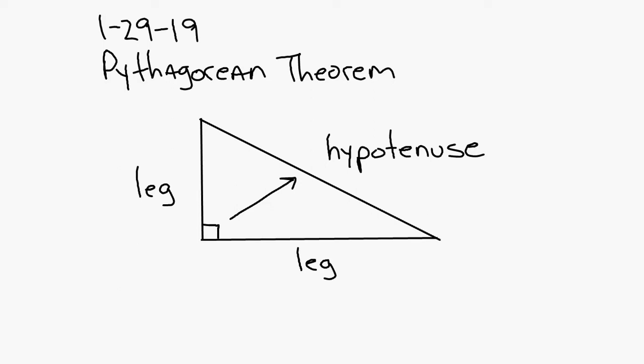When you're using the Pythagorean Theorem and finding the third side of a right triangle, you always want to label the sides of the triangle. You're going to use the letters A, B, and C. The legs are always letters A and B — it doesn't matter which one is A and which one is B — but the two sides that form the 90-degree angle are always labeled A and B. The hypotenuse is always labeled side C.